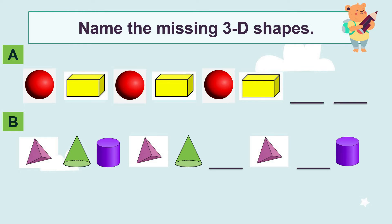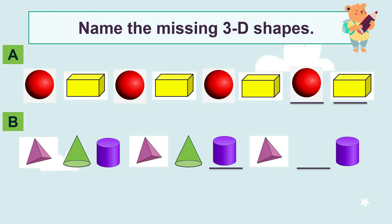Let's do a self test — name the missing 3D shapes. Look at pattern A: sphere, cuboid, sphere, cuboid, sphere, cuboid, then next sphere and cuboid. Look at pattern B: pyramid, cone, cone, cylinder, followed by pyramid, cone, cylinder, and pyramid, cone, cone, cylinder.